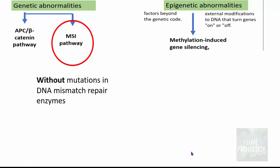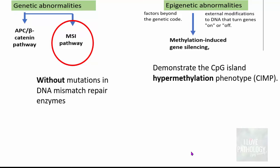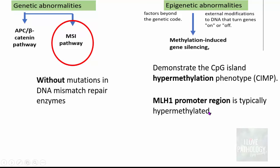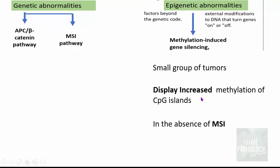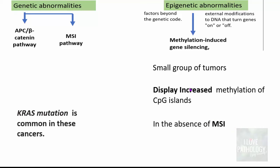In the MSI pathway epigenetic abnormality, there can be microsatellite instability without mutations in DNA mismatch repair enzymes. In these cases, they demonstrate CpG island hypermethylation phenotype — hypermethylation of CpG islands where the MLH1 promoter region is typically hypermethylated, resulting in reduction of MLH1 expression and repair function. In this type of carcinoma, BRAF mutation is more common. So these carcinomas have three features: microsatellite instability, hypermethylation of CpG islands, and BRAF mutation. Additionally, a small group of tumors display increased methylation of CpG islands in the absence of microsatellite instability, and in these tumors, KRAS mutation is common.